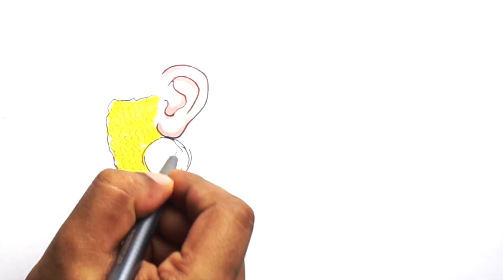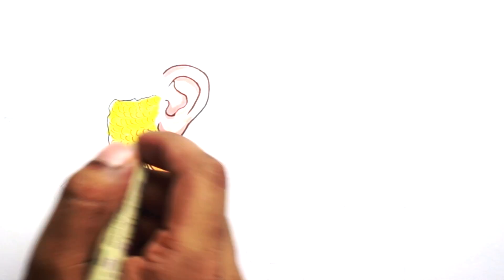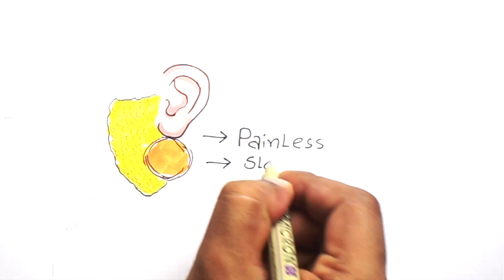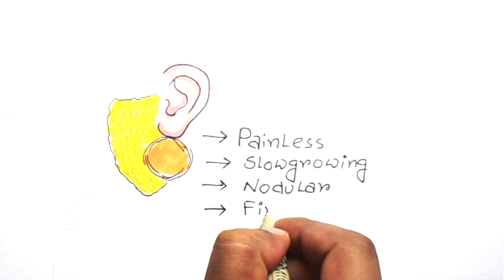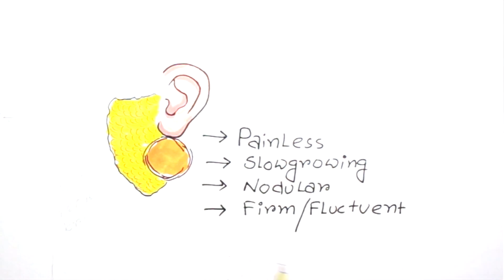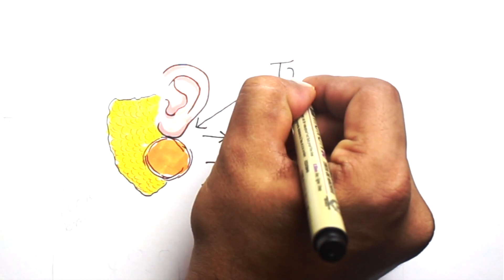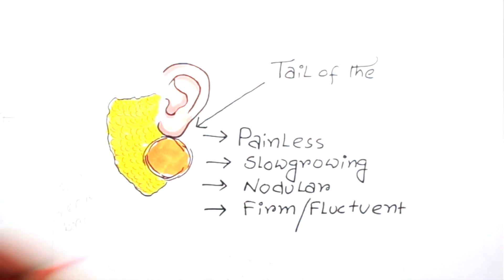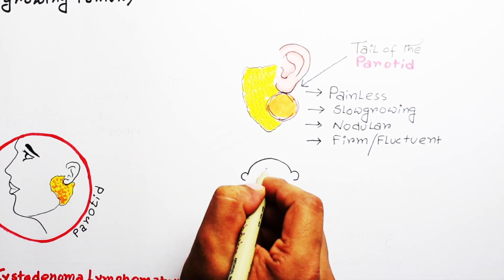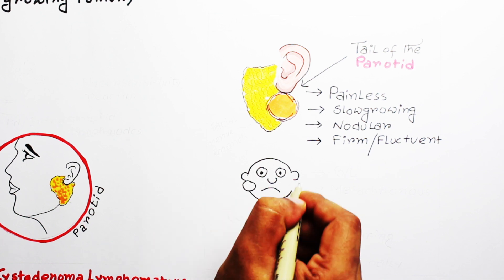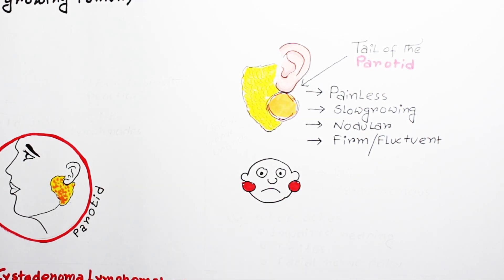Regarding clinical features, Warthin's tumor usually appears as a painless, slow-growing nodular mass that is firm or sometimes fluctuant on palpation. Because it is painless and slow-growing, it takes a significant amount of time before the patient seeks medical attention. It frequently occurs in the tail of the parotid, near the angle of the mandible or just below the ear.